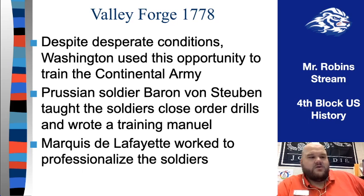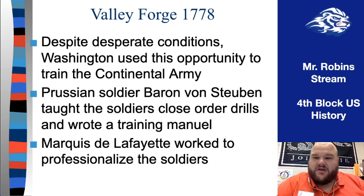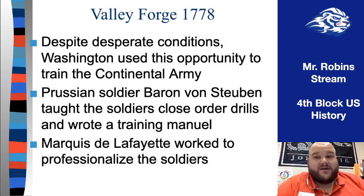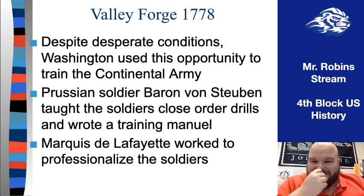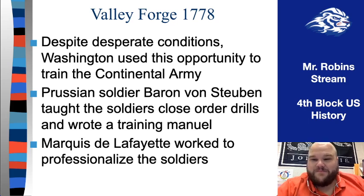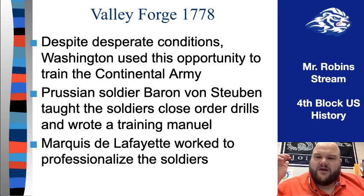Baron von Steuben was a German officer trained in the powerful Prussian armies who came over to help Washington. He worked on professionalizing the soldiers — teaching them how to march, stay in formation, and use their weaponry properly. He had a tough time because Prussian soldiers were trained to obey without question, but he found the Continental Army was different: the Americans would do what he said only if he explained why. There were even stories of soldiers intentionally doing the wrong thing to watch him freak out and start cussing in German, which they all thought was hilarious. Lafayette meanwhile worked behind the scenes standardizing uniforms and training, acting as a right-hand man to Washington.